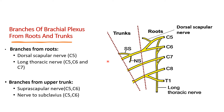Two nerves arise from the roots. The first is the dorsal scapular nerve, with root value C5, which goes to the scapular region. The second is the long thoracic nerve, with root value C5, C6, and C7, which runs on the thoracic region and supplies serratus anterior.